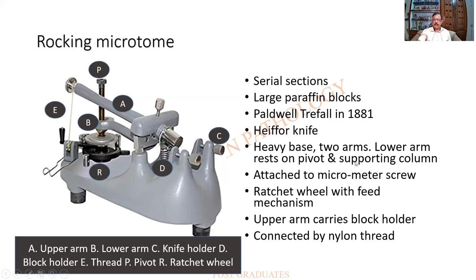The advantages include: it has a heavy base, two arms, and the lower arm rests on a pivot. It is attached to a micrometer screw and has a ratchet-and-wheel mechanism. The upper arm carries the block holder. All parts are connected by means of a nylon pipe. It is quite unlikely you will see it in current use.